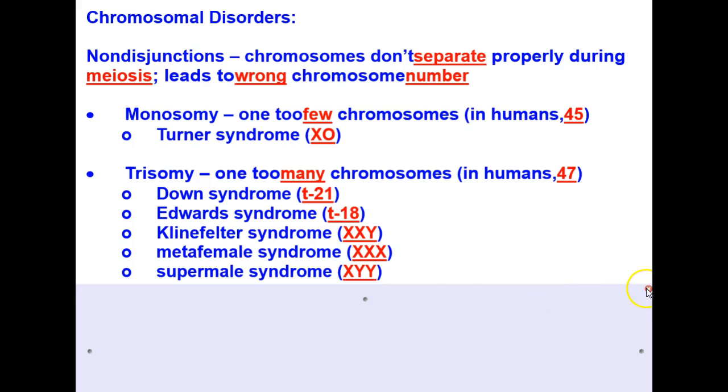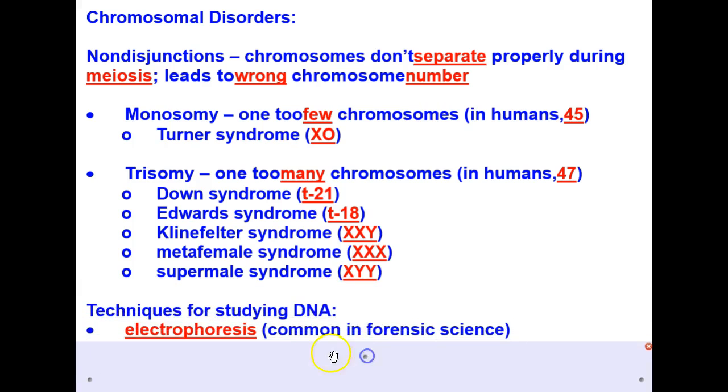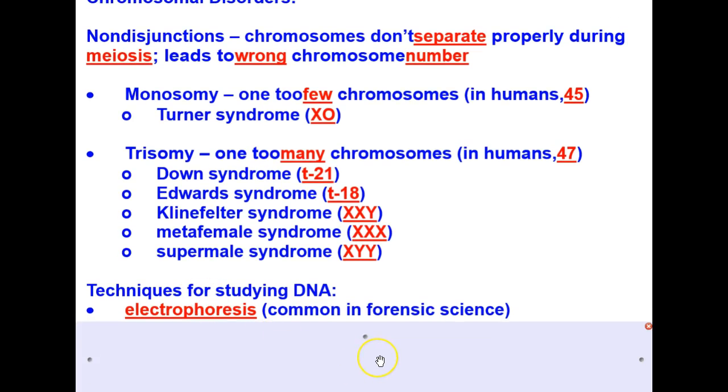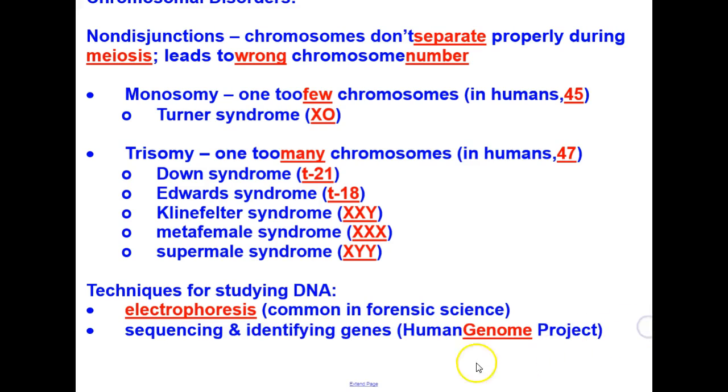There are many techniques for studying DNA. We can have electrophoresis, gel electrophoresis to do a DNA study, and this is very commonly done in forensic science. We also have what is called the human genome project going on, which is sequencing and identifying genes, and you'll see that discussed as well.